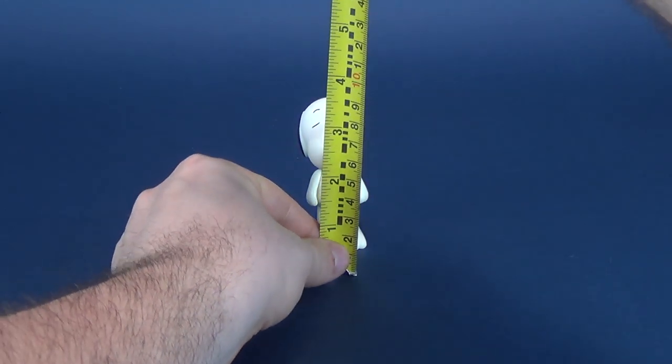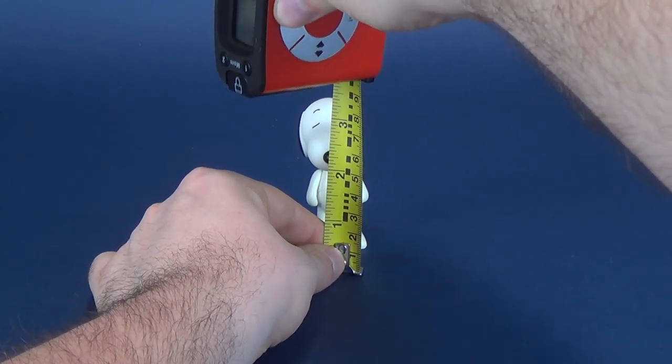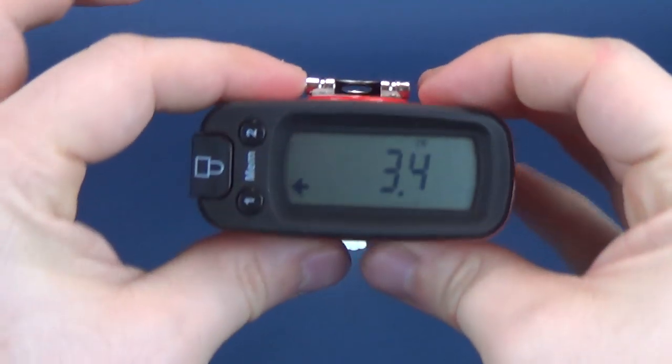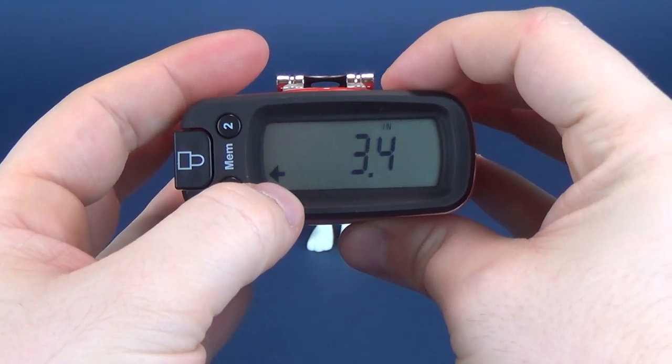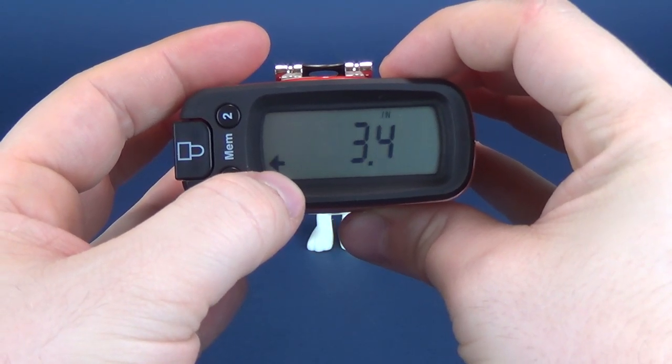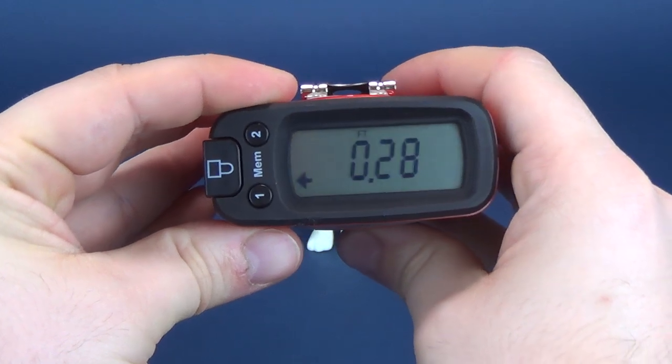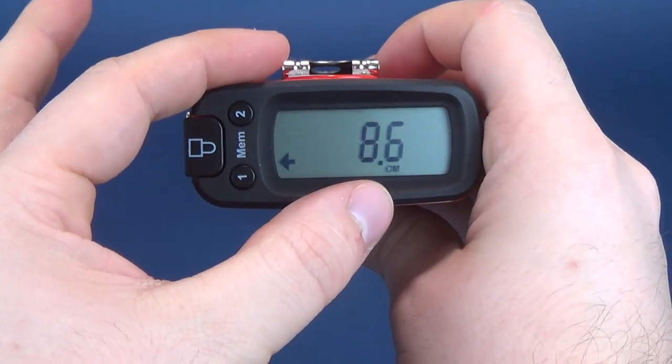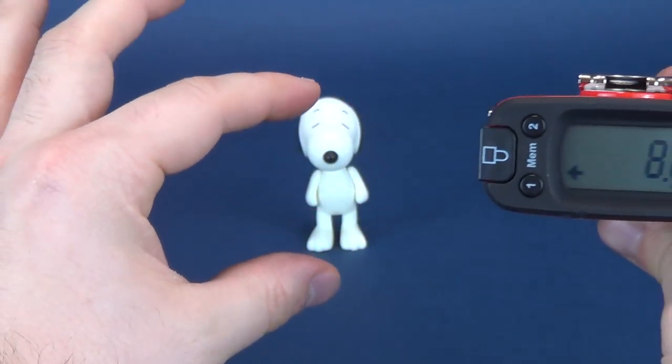Why don't we first start this review by figuring out how tall Snoopy is. We're going to put that right to the top of his head. The Ultramecrotron tells us that Snoopy is a very small 3.4 inches in height, which translated to centimeters, let me go ahead and do that right now, 8.6 centimeters is how tall little Snoopy stands.